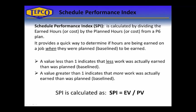The Schedule Performance Index or SPI is calculated by dividing the earned hours or cost by the planned hours or cost. It provides a quick way to determine if hours are being earned on a job when they were planned or baselined to be earned. A value less than one indicates that less work was actually earned than was planned. A value greater than one indicates that more work was actually earned than was planned. The formula for SPI is: SPI equals the earned value divided by the planned value.